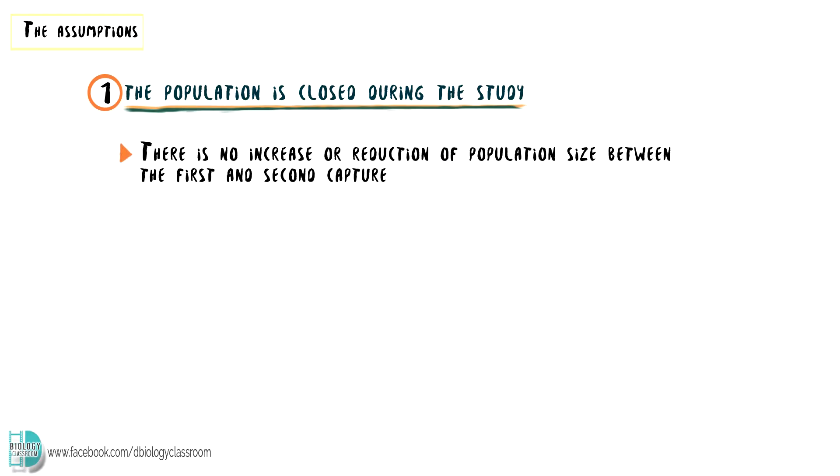The accuracy of this method depends on a number of assumptions being met. The first one is that the population is closed during the study. There is no increase or reduction of population size between the first and second capture, including birth and death and also the migration of individuals in or out of the population.